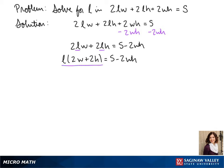To get L by itself, we divide by that whole quantity 2W plus 2H on both sides. So L is equal to S minus 2WH over 2W plus 2H.